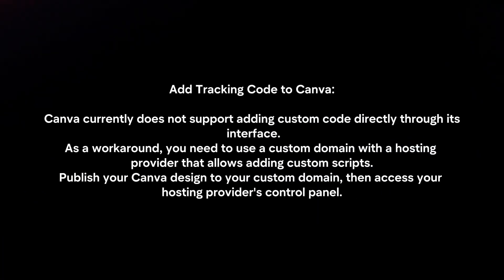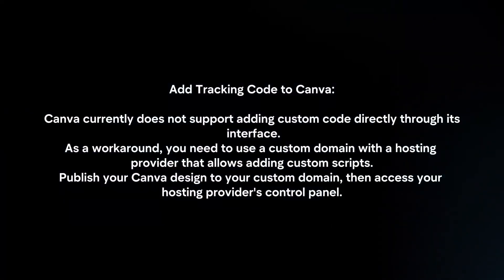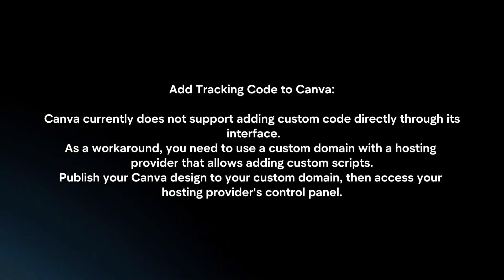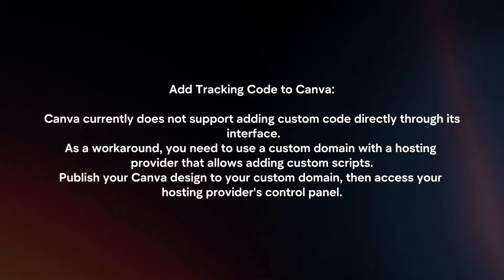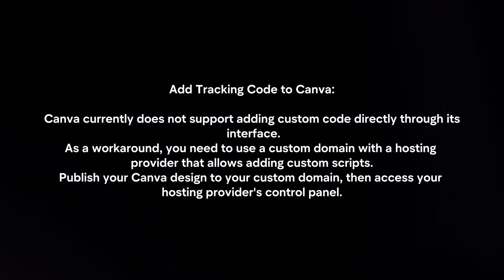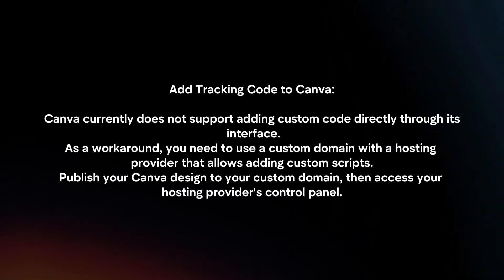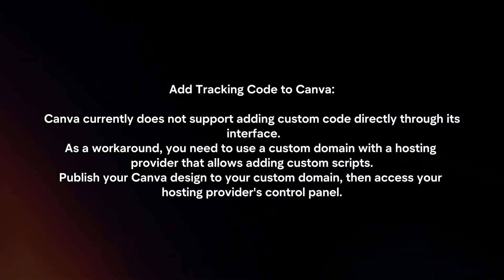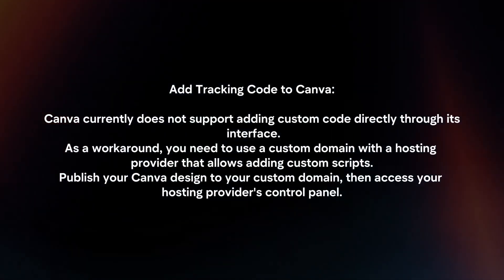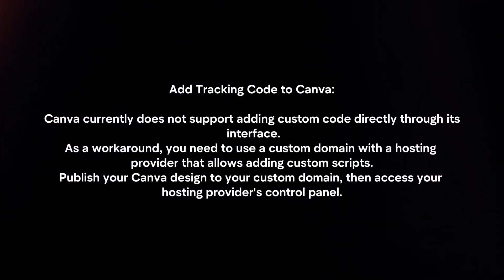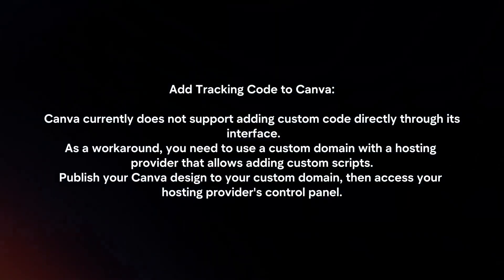To add tracking code to Canva: Canva currently does not support adding custom code directly through its interface. As a workaround, you need to use a custom domain with a hosting provider that allows adding custom scripts. Publish your Canva design to your custom domain, then access your hosting provider's control panel.